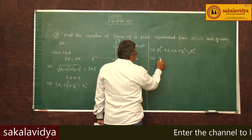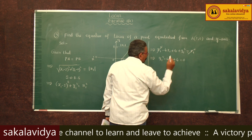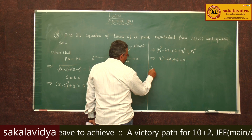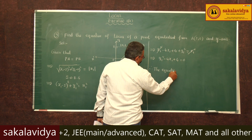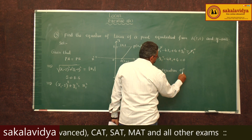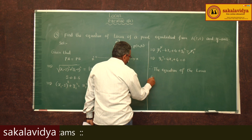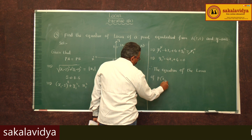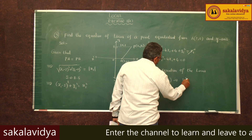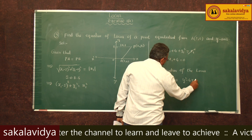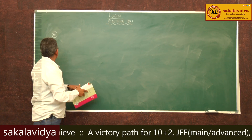This simplifies to y1² - 4x1 + 4 = 0. Therefore, the equation of the locus of P(x1, y1) is y² - 4x + 4 = 0.